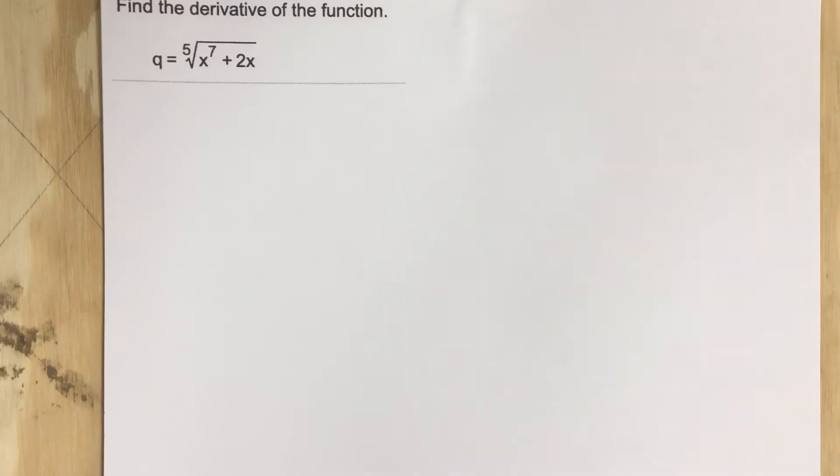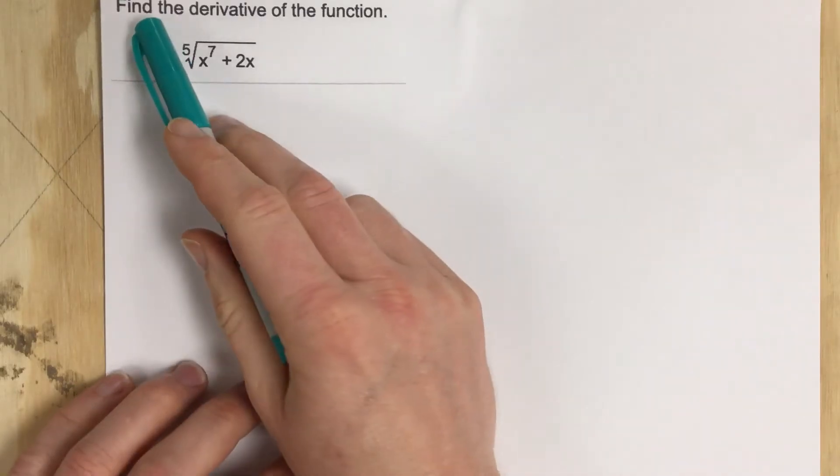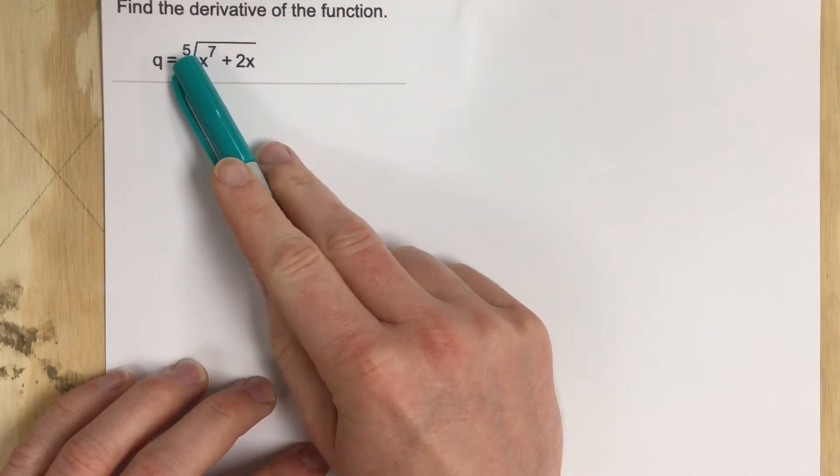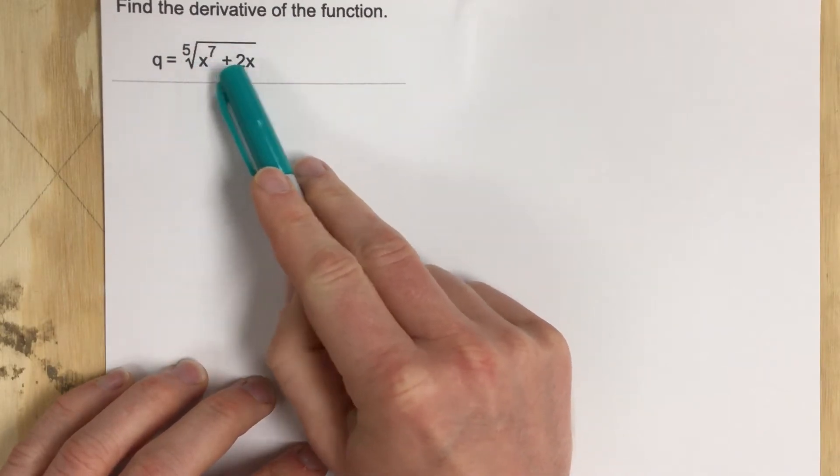This is problem number four for section 3.6 and this problem says find the derivative of the function. They give you Q equals the fifth root of X to the seventh plus 2X.